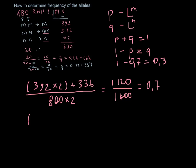And we know that we have 72 alleles of N present. We have to multiply by two and plus 336.